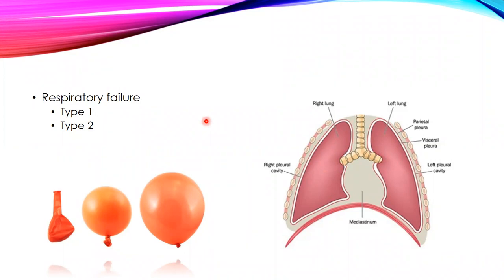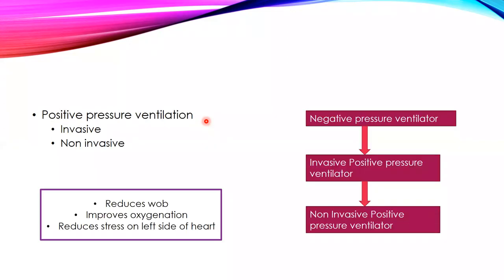This is the basic concept behind applying positive pressure ventilation. Coming to respiratory failure — normally the function of the respiratory system is to help gas exchange, oxygenate, and wash out carbon dioxide. When the respiratory system is not able to do these two functions we label it respiratory failure. There are two types: Type 1 where oxygenation is affected but CO2 is normal or low, and Type 2 where both oxygen is low and CO2 is high.